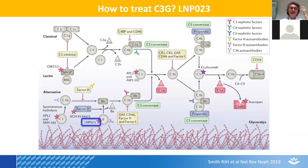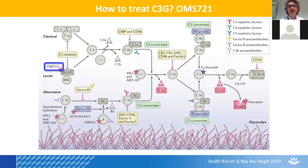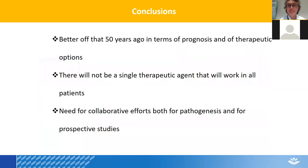Another agent is LNP023, which blocks factor B — a complement regulator working at the level of C3. This is also orally administered, given twice daily, and a large clinical trial enrolling adults is also very shortly going to be started, if not already running in a few isolated centers. The last molecule is OMS721, which has been tried in C3G but blocks the lectin pathway, so it's more likely to be effective in other glomerular diseases such as IgA nephropathy, though it may potentially be useful in some C3G patients. The evidence is tiny and unpublished.